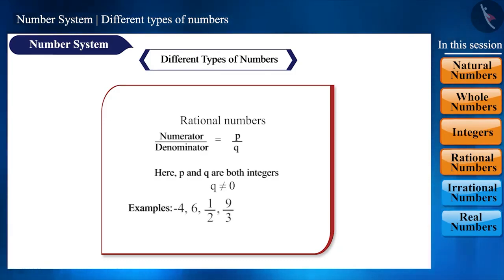We refer to it with the symbol Q, which is derived from the English word quotient. But why quotient, friends? Because P by Q is a fraction that gives us the quotient.